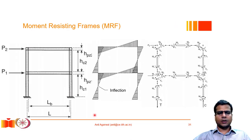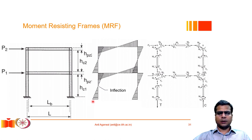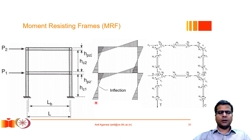In this lecture we will focus primarily on moment frame resistance systems. There are two distinct types: one is known as the ordinary moment resistance frame (OMF), and the other is known as the special moment resistance frame (SMRF). There is also another variety prevalent in American codes known as intermediate moment resistance frames, but that is not covered in the Indian code.